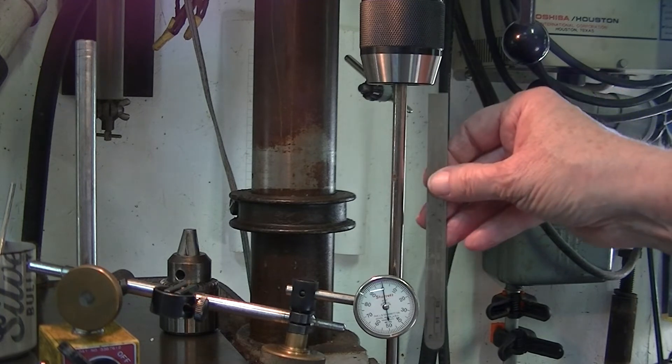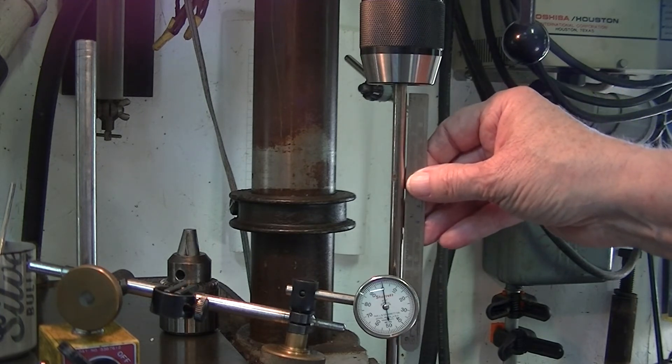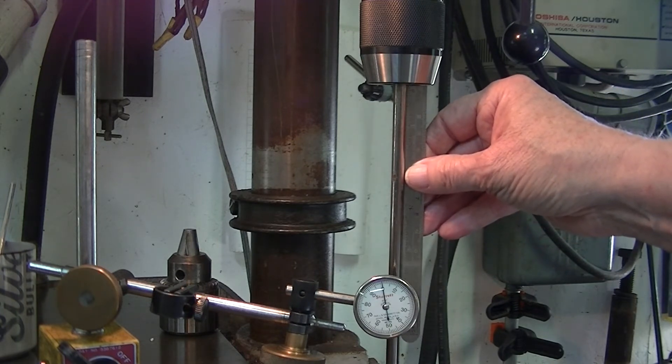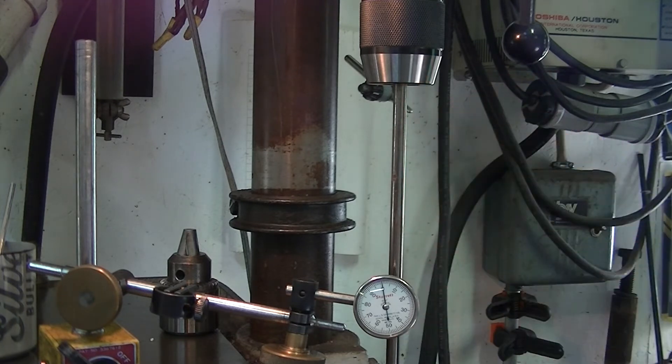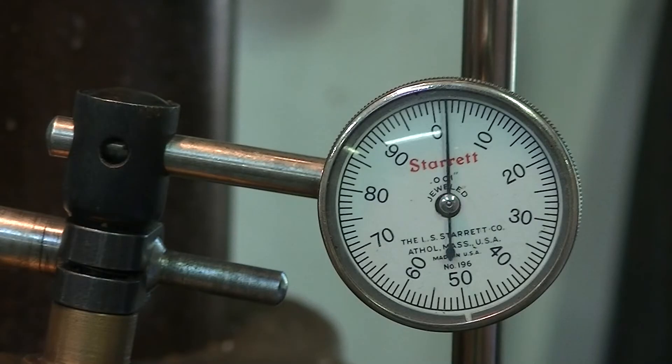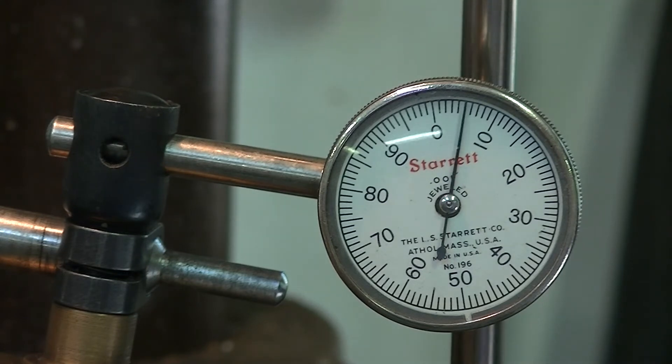Now I've moved the indicator about five inches down the steel rod. That looks like about five thousandths, which isn't bad on a drill.